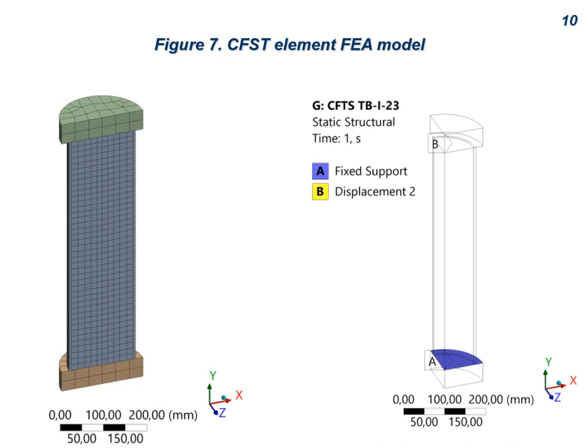In the CFST FEA model, the connection between the base plates and the pipe was set as bonded, and between the base plates and the concrete was frictionless. All elements were modeled using Solid186 hex elements, which are defined by 20 nodes having 3 degrees of freedom per node. The element supports ductility, hyper-elasticity, creep, large deflections, and large stresses. The size of the concrete element was taken equal to 15.2 mm; for the pipe, 5.5 mm; and for the base plates, 32 mm (Figure 7).